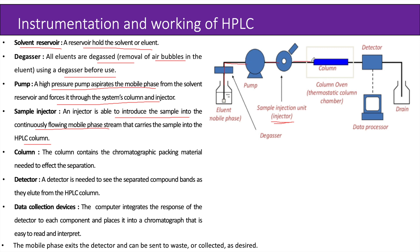Next is the column, which contains the chromatographic packing material needed to effect the separation. A detector is needed to see the separated compound bands as they elute from the HPLC column. Data collection devices — the computer integrates the response of the detector to each component and places it into a chromatograph that is easy to read and interpret. The diagram shows the entire setup of the HPLC instrumentation.